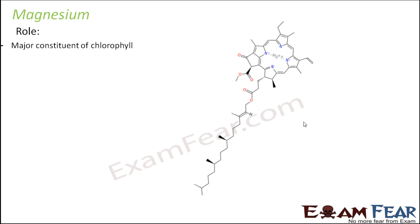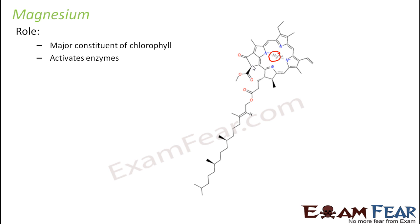The next element is magnesium. It is a major constituent of chlorophyll, and looking at the structure of chlorophyll you can see the presence of magnesium. Chlorophyll is essential because it drives the process of photosynthesis, by which plants prepare their own food. Magnesium also activates enzymes needed for growth of the plant, for producing sugars, fats, and carbohydrates. It is also essential for germination of seeds.